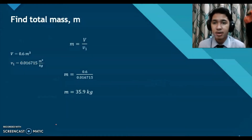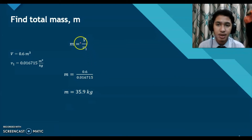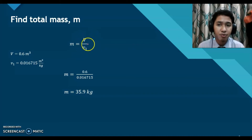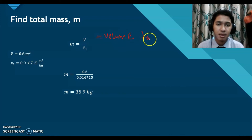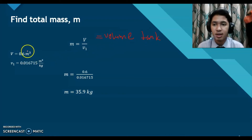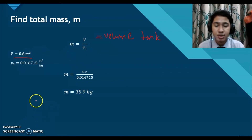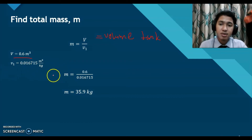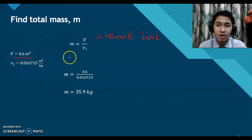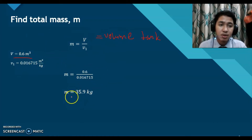Now we find the total mass using the equation: mass equals V over V1, where V is the volume of the tank, which is 0.6 m³, and V1 is 0.0167115 m³/kg. Substituting into the equation gives total mass equals 35.9 kg.